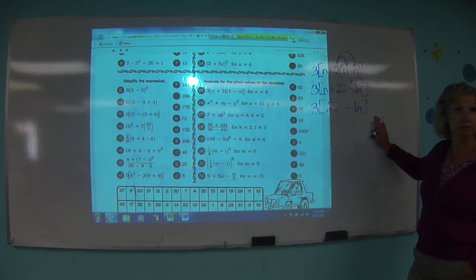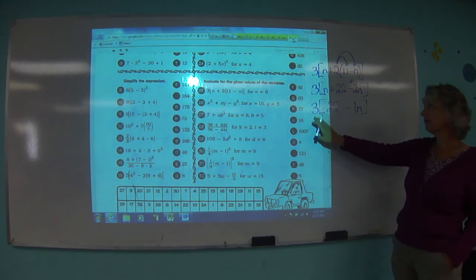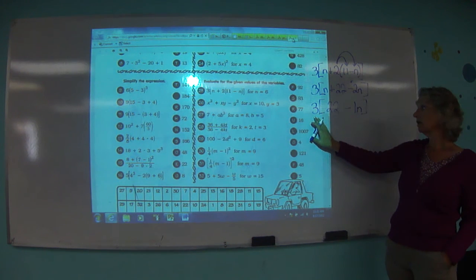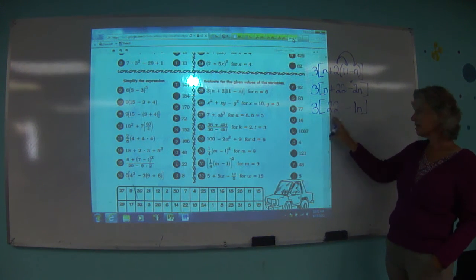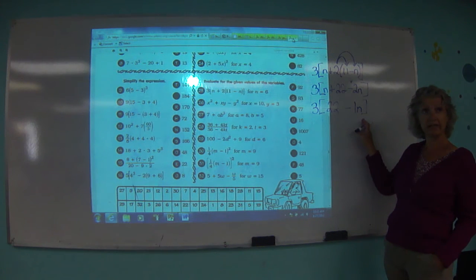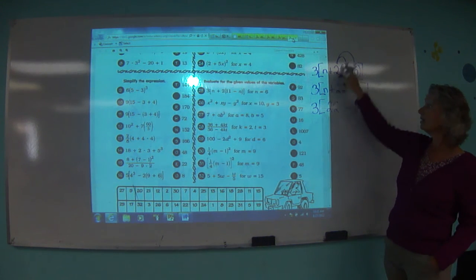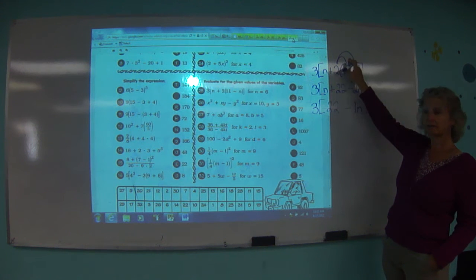With me so far? Yep. Excellent. What do you think we have? We have this 3 hanging out out here and these guys inside. Can these guys be combined, 22 and a negative n? No, because one's yellow and one's purple, right? So what do we do? Are we going to do the same thing we did up here? Absolutely.